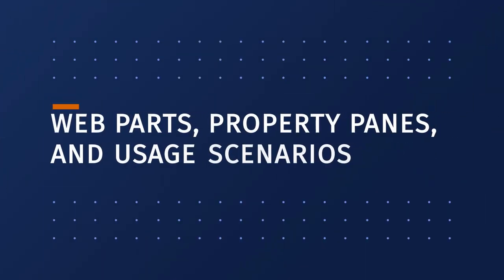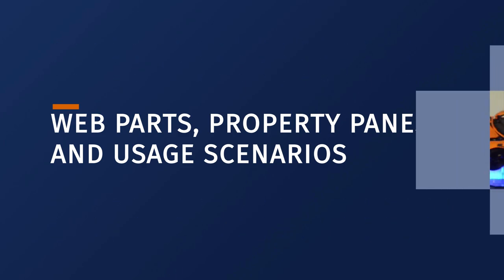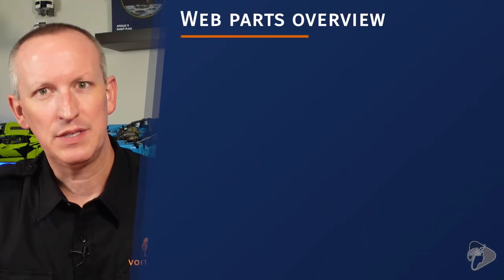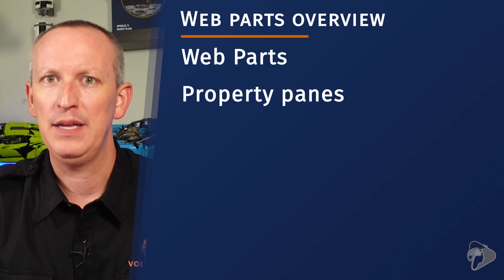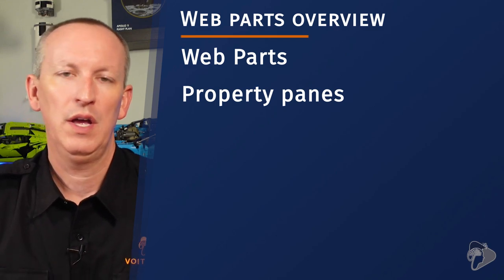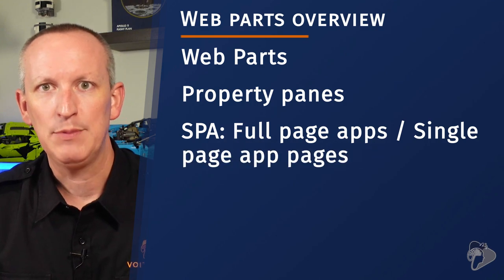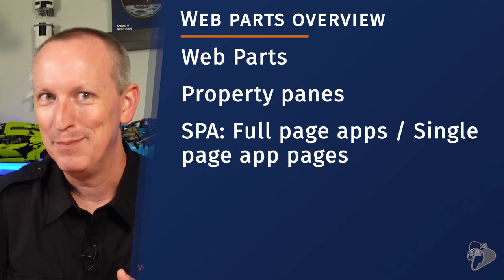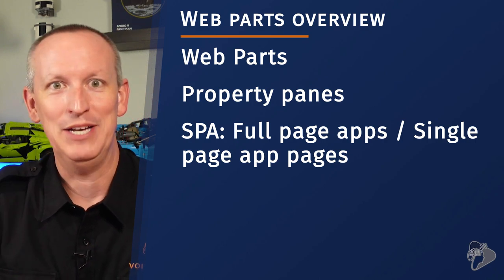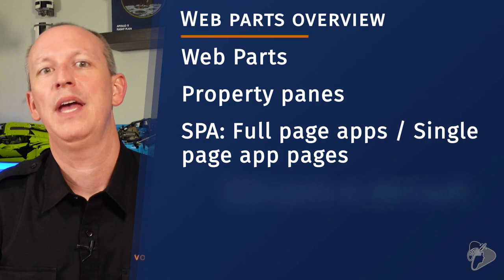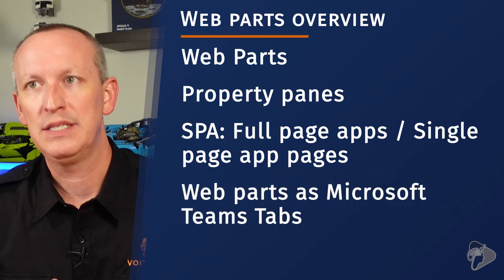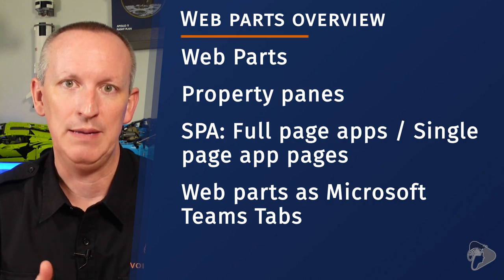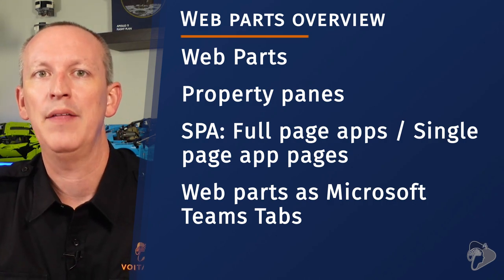In this lesson, we're going to cover SharePoint framework web parts — the different types and the various aspects you need to be familiar with for the MS600 exam. We also need to discuss property panes and another unique case for web parts called full page apps, also known as single page app pages or SPAs. We'll also cover using web parts as the implementation for custom tabs inside of Microsoft Teams — specifically how they can be used as custom tabs, which is what the exam focuses on.